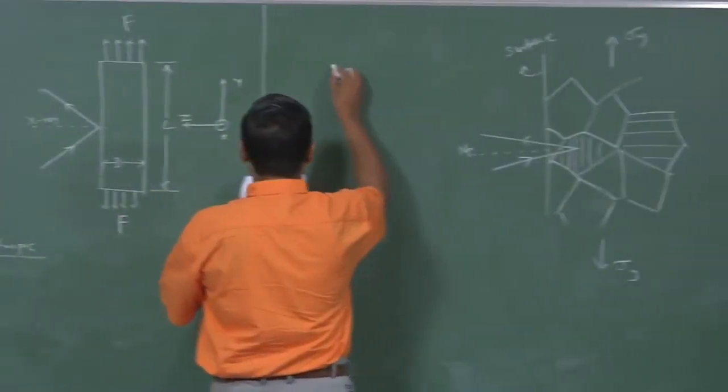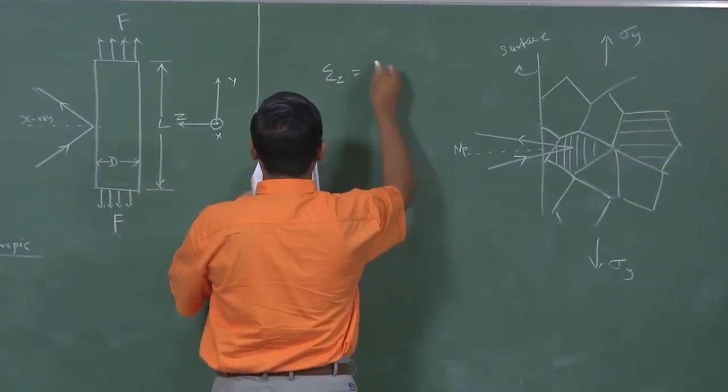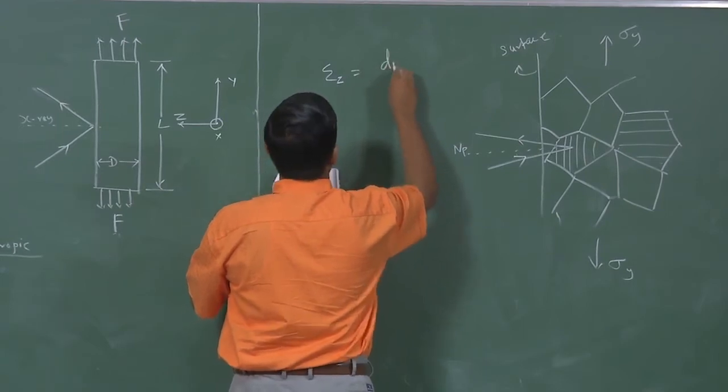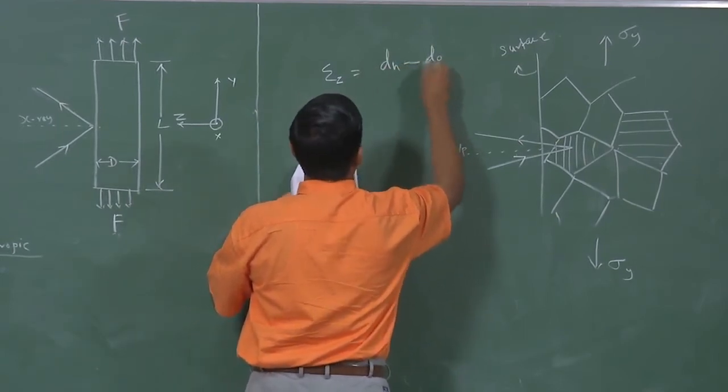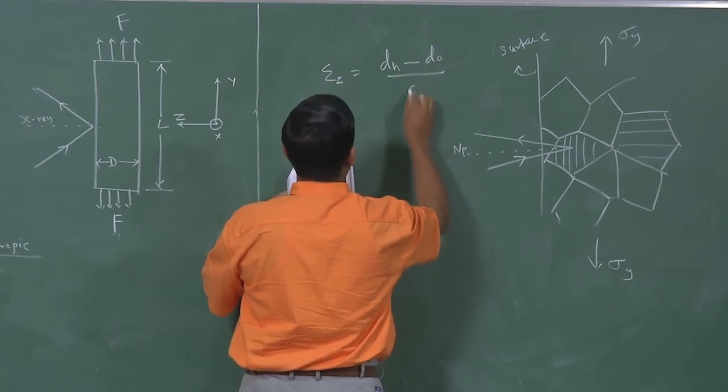We can quickly look at epsilon z equals Dn minus D0 divided by D0.